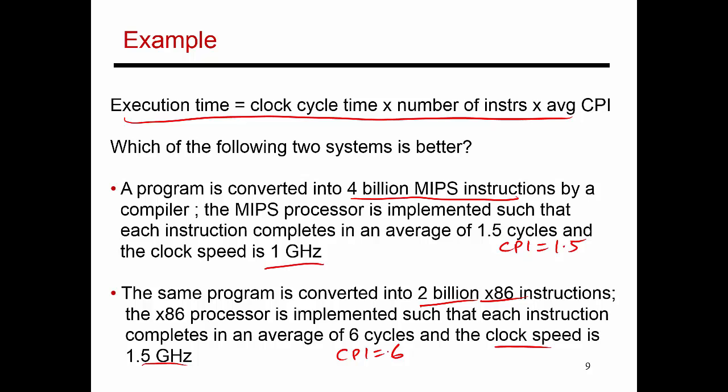Let's look at the execution time for that same program on the first architecture. Clock cycle time is 1 by 1 gigahertz times the number of instructions, which is 4 billion times the average CPI of 1.5. So this program takes six seconds to finish on the MIPS processor.